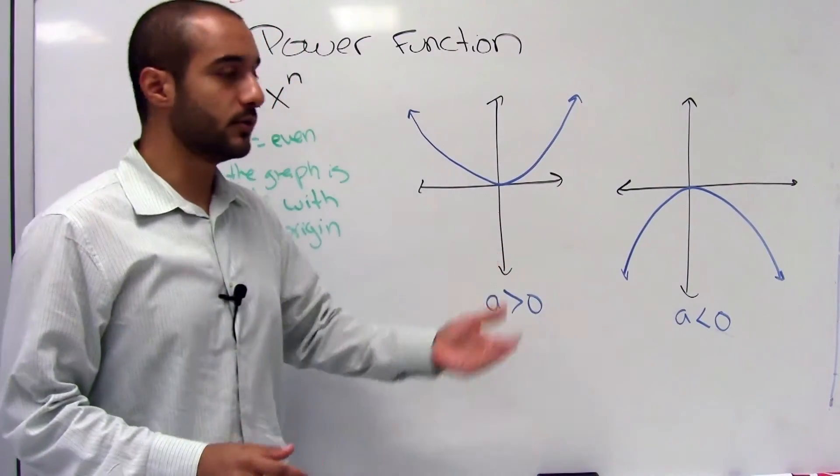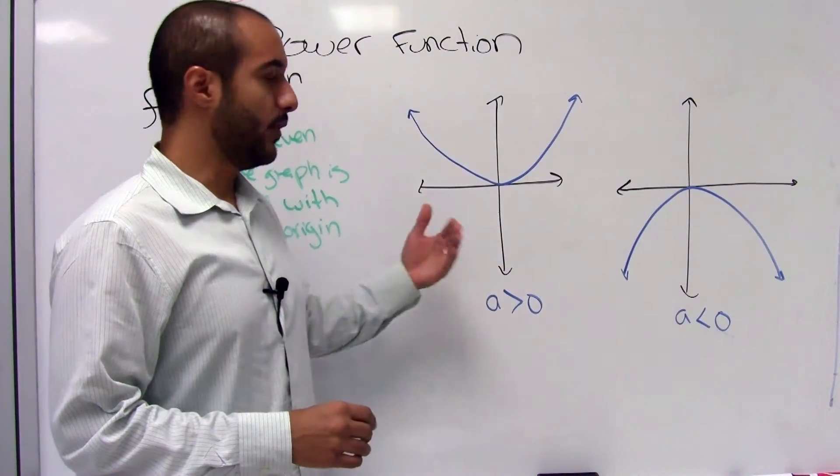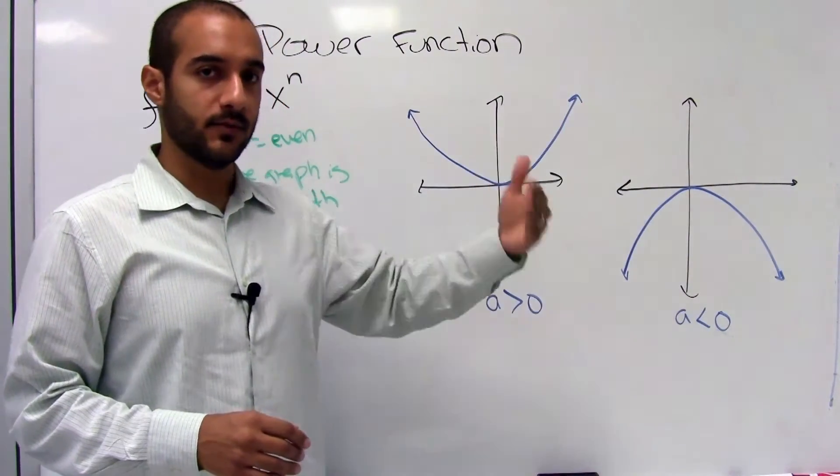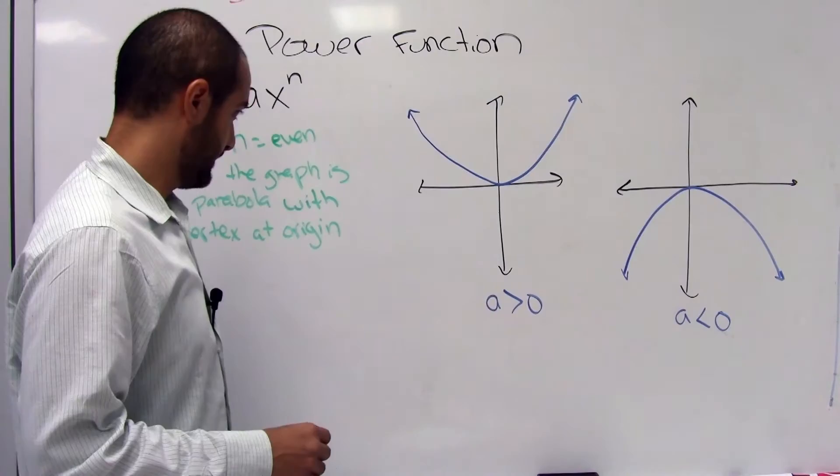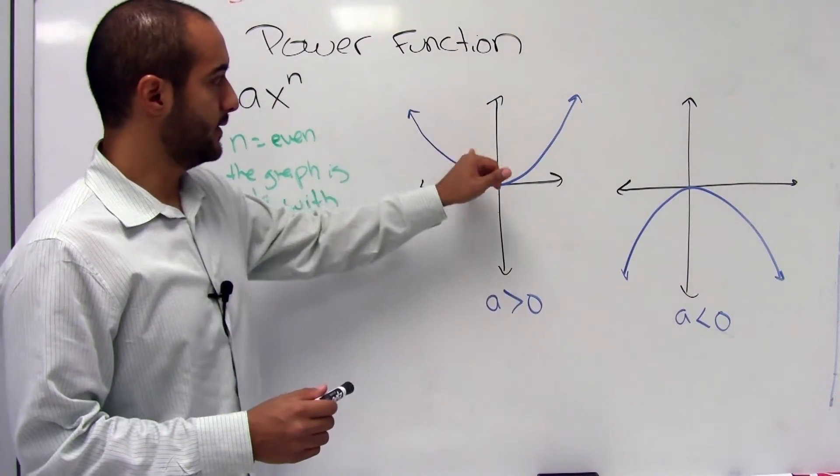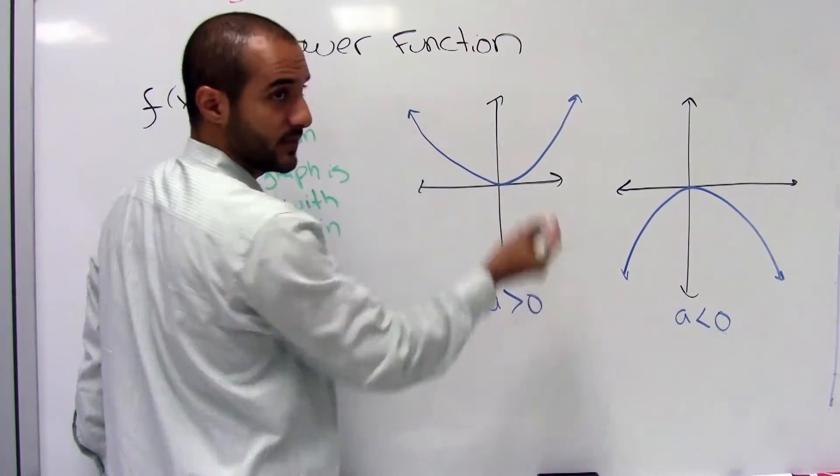Now, I mentioned that this is the general look for any of the even numbers, but what happens as they get higher, so from 2 to 4 to 6 to 8, well, what's going to happen is that they'll increase in magnitude, so here it'll actually get steeper faster.